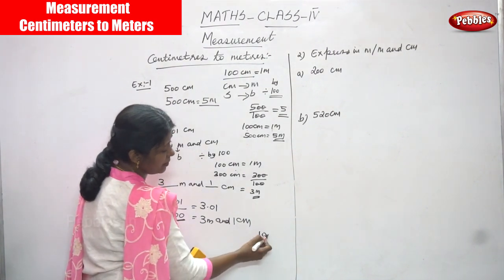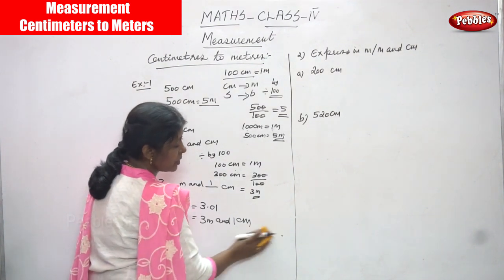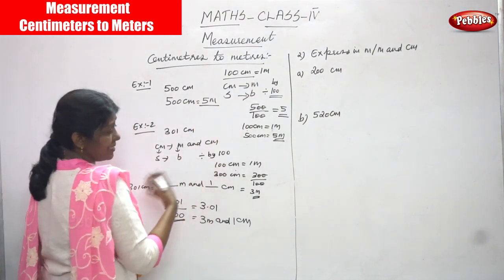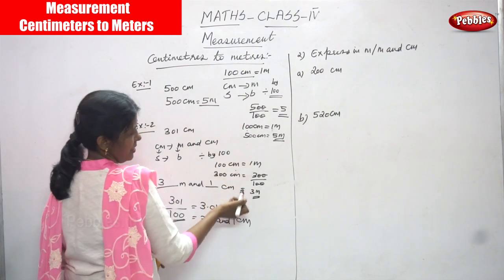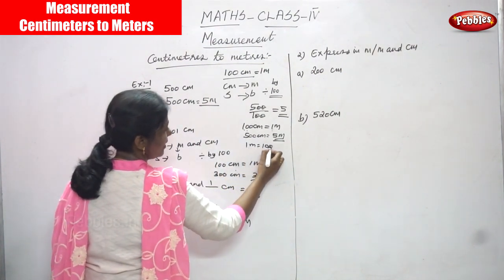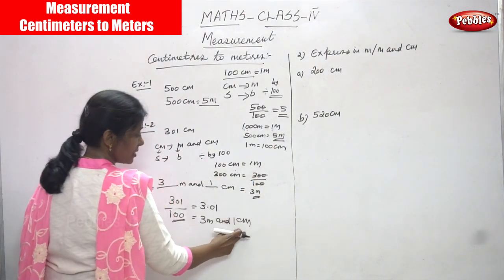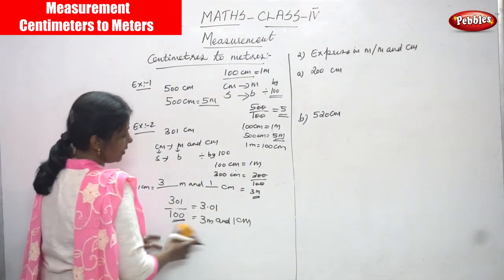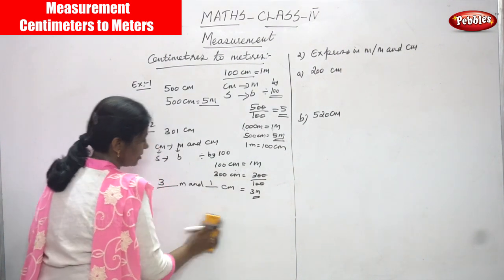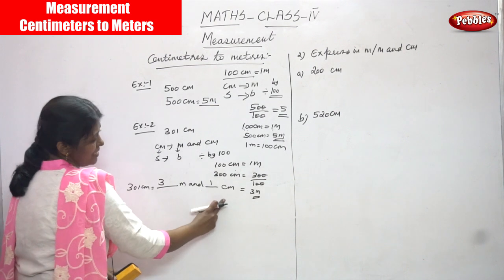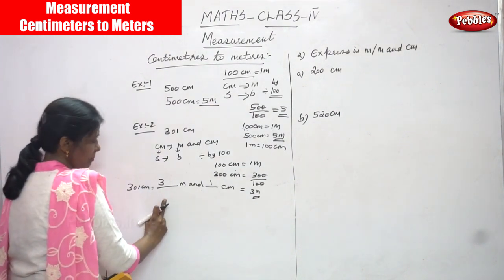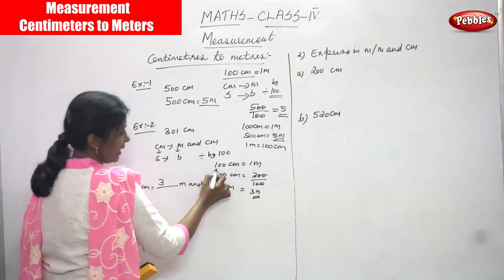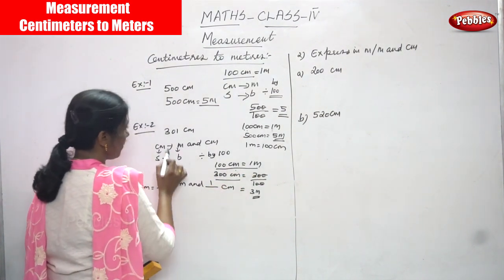Already you know that 100 centimeters is equal to 1 meter. So 1 meter is equal to 100 centimeters. If you want to change this: 100 centimeters is equal to 1 meter, so 1 centimeter is going to be divided by 100, you can get 0.01. It is a little confusing — I didn't suggest this method. Better you write 3 meter and 1 centimeter.